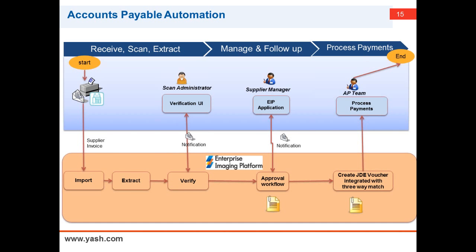Once the invoice is reviewed by, let's say, the original requester of that purchase order and they approve it, we automatically create that voucher — in this case in JD Edwards or other ERP systems. Without anyone having to type in any information, a voucher is created within the ERP system. We also include a link to the original image within that voucher, so the AP team can look at the image if they have any questions without going through filing cabinets. With that, I want to show you a quick demo of this accounts payable automation process.